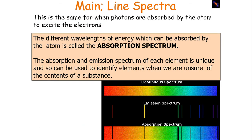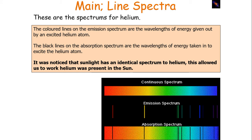The different wavelengths of energy which can be absorbed by the atom follow the same principle, and this is called the absorption spectrum, because it's the same for when photons are absorbed by the atom to excite the electrons up the energy levels. The absorption and emission spectrum of each element is unique. The coloured lines on the emission spectrum are the wavelengths given out by an excited helium atom, and the black lines on the absorption spectrum are the wavelengths taken in to excite it. It was noticed that sunlight had an identical spectrum to helium, which allowed us to determine that helium was present in the sun.